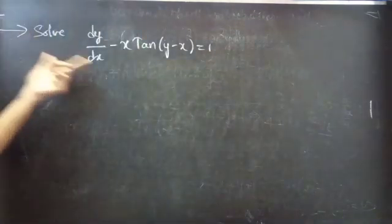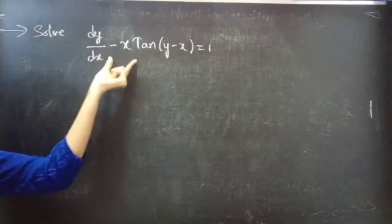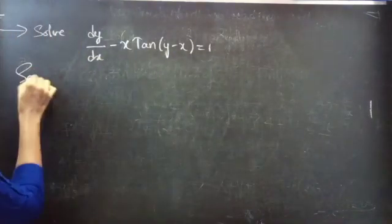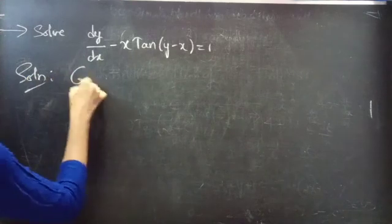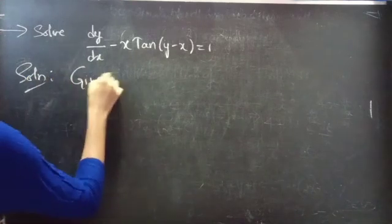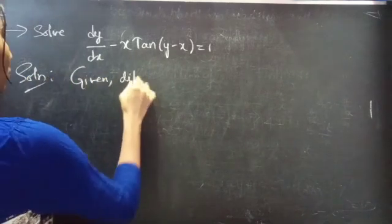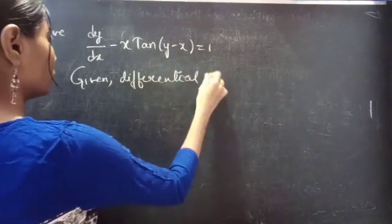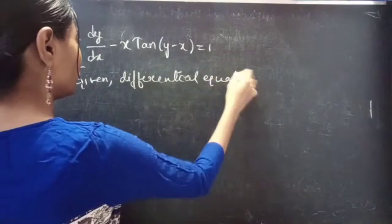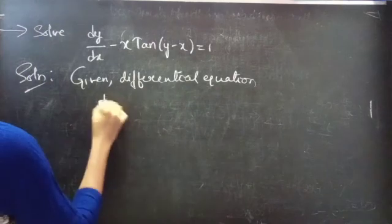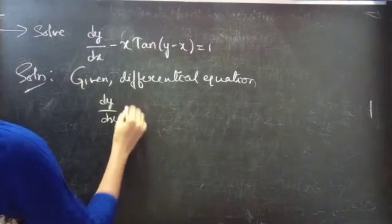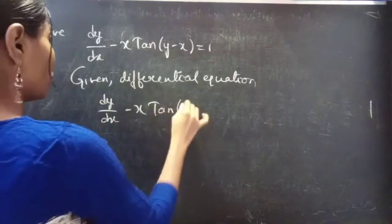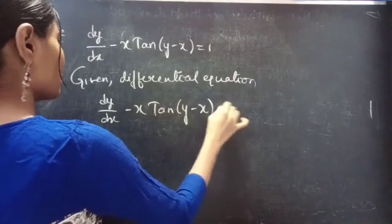Problem: Solve dy/dx minus x·tan(y minus x) equals 1. Solution — given differential equation: dy/dx minus x·tan(y minus x) equals 1.